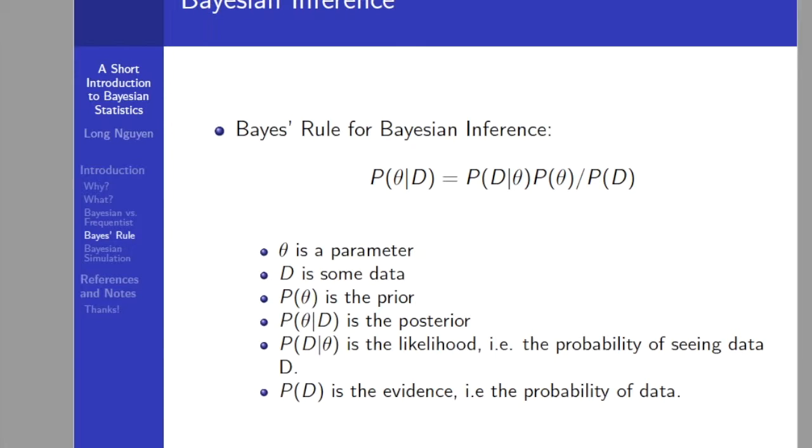P of D is the evidence. This is the probability of the data D as determined by summing or integrating across all possible values of Theta, weighted by how strongly we believe in those particular values of Theta. For example, if we had multiple views of what the fairness of the coin is, but didn't know for sure, then this tells us the probability of seeing a certain sequence of flips of all possibilities of our belief in the coin fairness.